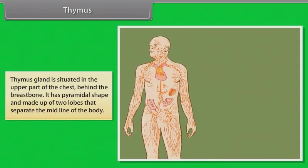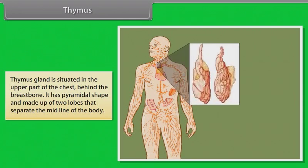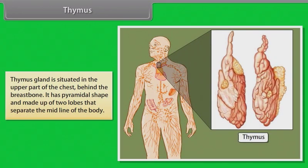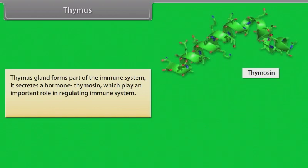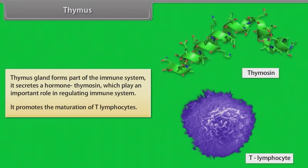The thymus gland is situated in the upper part of the chest behind the breastbone. It has a pyramidal shape and is made up of two lobes that separate at the midline of the body. The thymus gland forms part of the immune system. It secretes a hormone, thymocin, which plays an important role in regulating the immune system and promotes the maturation of T lymphocytes.